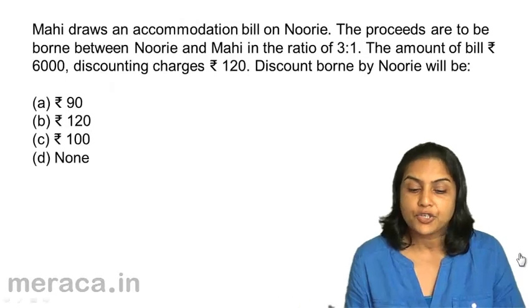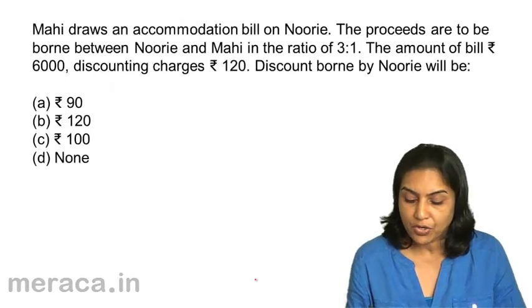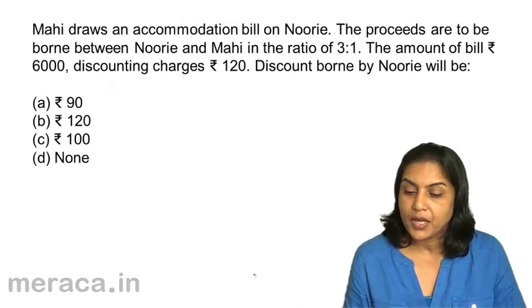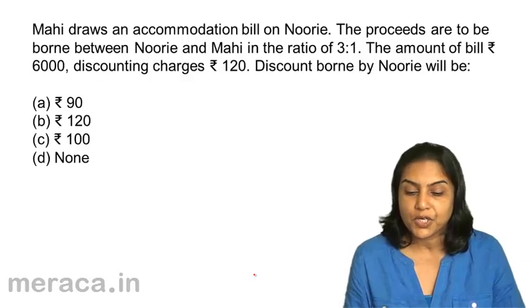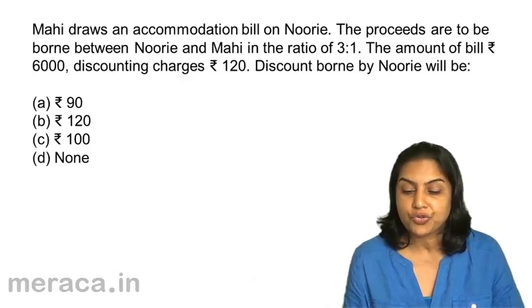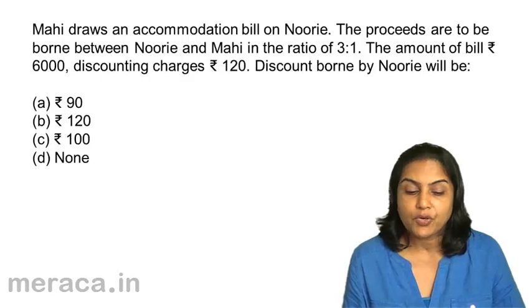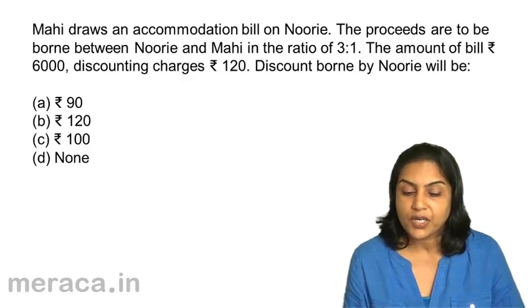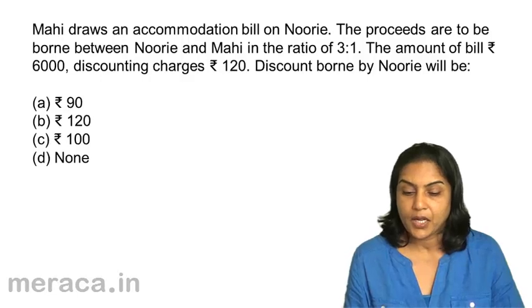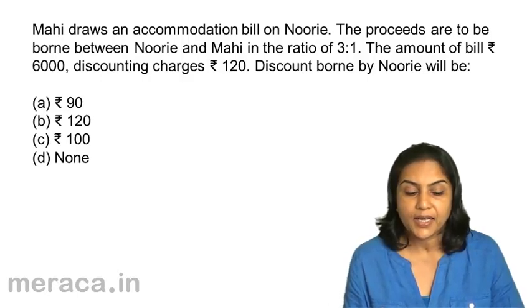Mahi draws an accommodation bill on Nuri. The proceeds are to be shared between Nuri and Mahi in the ratio 3:1. The amount of the bill is Rs.6,000 and discounting charges are Rs.120. The question is: discount borne by Nuri will be — A) 90, B) 120, C) 100, D) none.